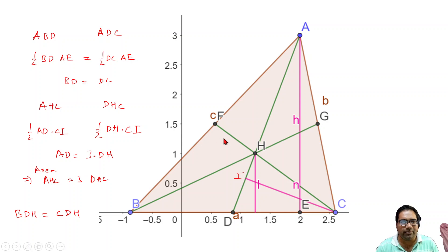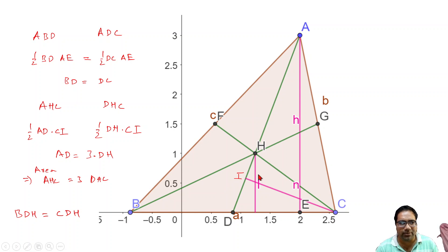Similarly, let us take triangles BDH and HDC, where H is the centroid. These two triangles also have the same base BD equals DC, and the same perpendicular height — this short line L. So the area of BDH equals the area of CDH.